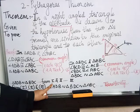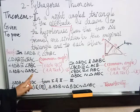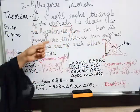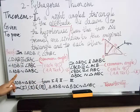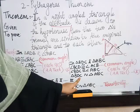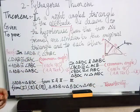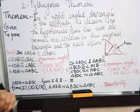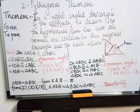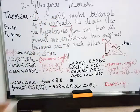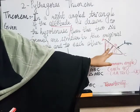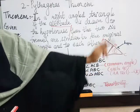From equations 1, 2, and 3, we have proved all three similarity relations. So if we draw an altitude on the hypotenuse of a right-angled triangle, two triangles are formed which are similar to the original triangle and to each other.